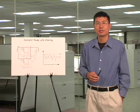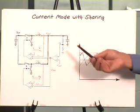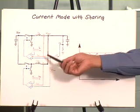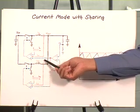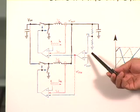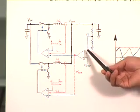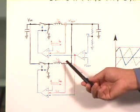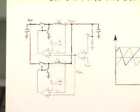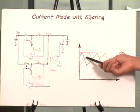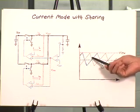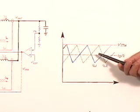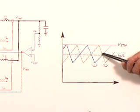Current mode control makes current sharing very simple and straightforward. In current mode control, the inductor current follows the error amplifier output voltage. We can simply use a single error amplifier and share its output voltage among all channels. By doing this, naturally you'll have good current sharing among channels. This is inherent current sharing, which is also a fast cycle-by-cycle current sharing.